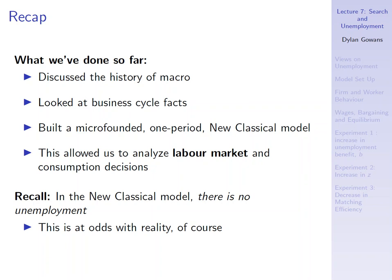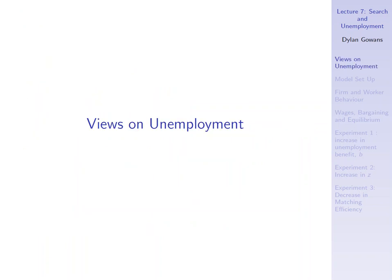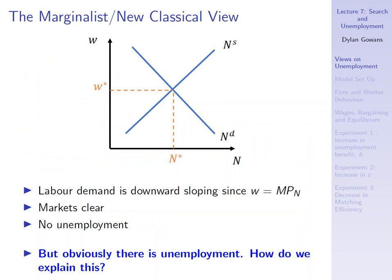So what gives? I'm going to talk about a few views on unemployment. The first is the new classical view — what we just saw in our model — which really goes back to the marginalists who developed microeconomics in the 1800s. The key here is a well-behaved labor market: an upward-sloping labor supply curve and a downward-sloping labor demand curve, and if ever temporarily out of equilibrium the wage will adjust to bring labor demand equal to labor supply.